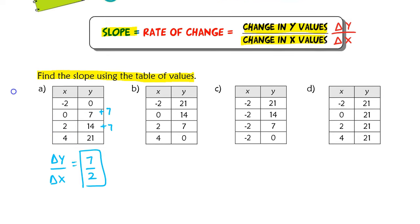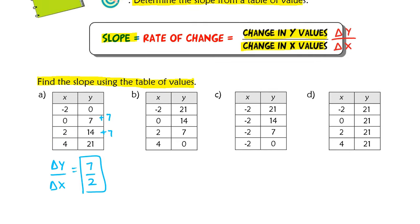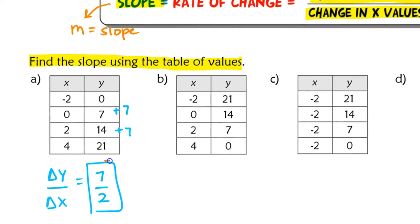One additional thing to note: the variable we use for slope is m. This is something you're going to see a lot, so write this down on your paper. Slope equals m.